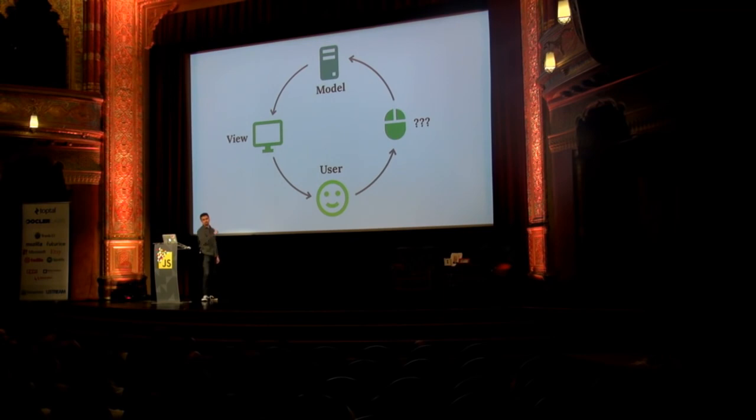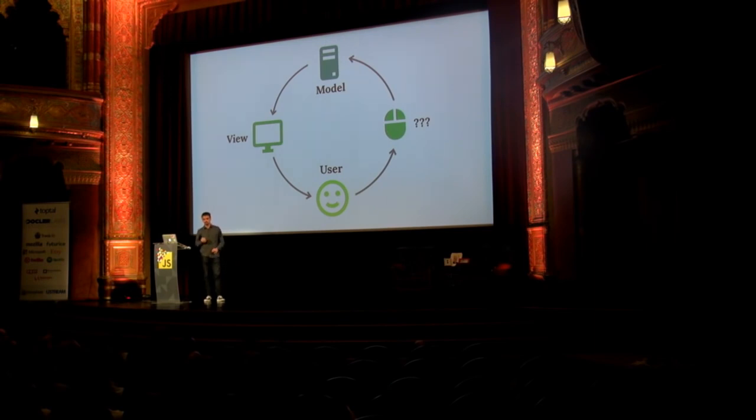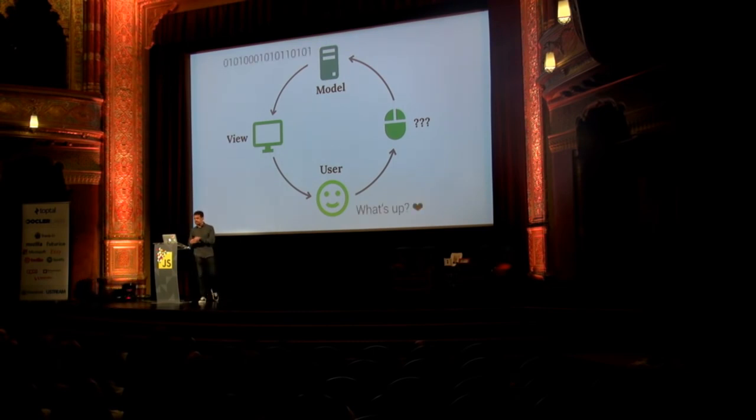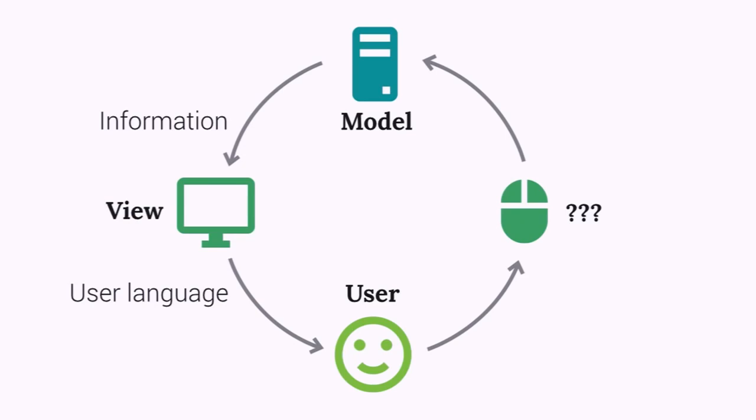It looks like those could correspond to model, view, and user — but we don't know how to name the mouse; it cannot be named controller. The original idea in MVC from Smalltalk was to bridge the gap between digital information in the computer and the user's mental model. The computer speaks bits — zeros, ones, and bytes — and you speak English, Hungarian, and cat pictures. So the view translates from zeros and ones to English and cat pictures, bridging that gap.